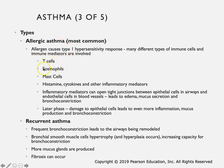The immune cells involved include T cells, eosinophils, mast cells that release histamine, cytokines, and other inflammatory mediators - these are all released by immune cells that are activated. Those inflammatory mediators can actually open tight junctions between the epithelial cells in the airways and also affect the endothelial cells in blood vessels, leading to things being able to get into and out of the blood vessels and respiratory airways.